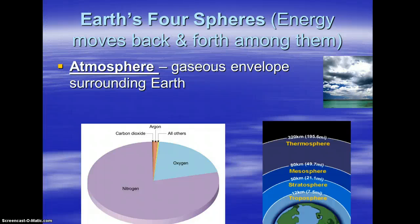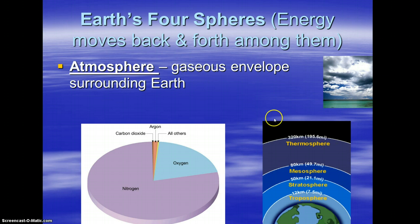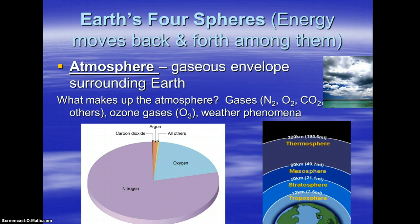The first one is the atmosphere, which is a gaseous envelope surrounding the Earth. A nice analogy is that if the Earth was an apple, the skin of the apple would be the atmosphere. Even though this image is misleading because it makes it look very thick, this image is merely a model showing the layers of the atmosphere, not a true indication of thickness. This is where all of our gases occur. Primarily we have nitrogen at 80%, then oxygen at roughly 20%, and carbon dioxide and others making up less than 1%. Ozone gases also occur there, and all of the weather phenomena occur there.